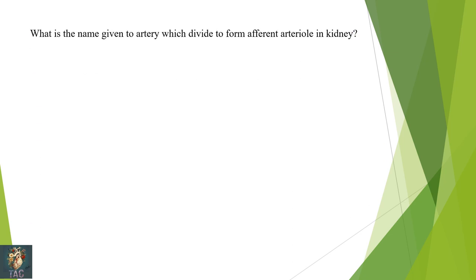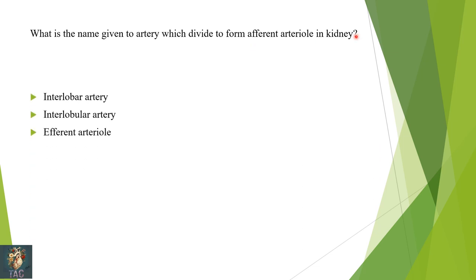Next: what is the name given to the artery which divides to form arterioles in the kidney — interlobar, interlobular, efferent arteriole, arcuate, or efferent artery? The efferent arteriole is formed by a branch of the interlobular artery. Correct option is B: interlobular artery.